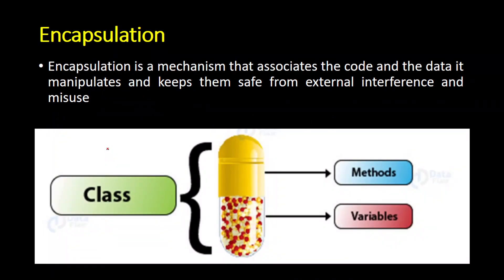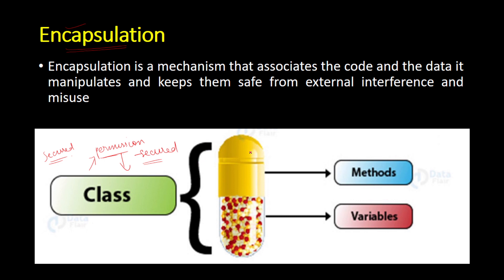Moving to the third concept: encapsulation. This is a kind of virtual property. Encapsulation is a mechanism that associates the code and data and keeps them safe from external interference. The data and operations present inside a class are secure. If you want to use them outside the class, you have to get permission from the class. That's why object-oriented programming is called a secured programming paradigm, and this security is applied through encapsulation.